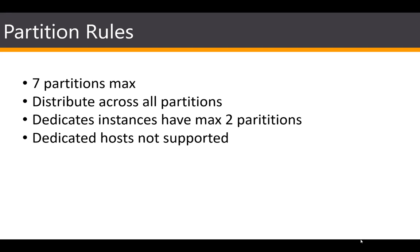For partition placement groups, there is a maximum of seven partitions per availability zone. The number of instances you can launch is limited by your account limits. AWS tries to evenly distribute instances across all partitions but does not guarantee an even distribution. With dedicated instances, you can have a maximum of two partitions, and partition placement groups are not supported for dedicated hosts.